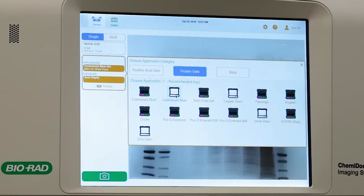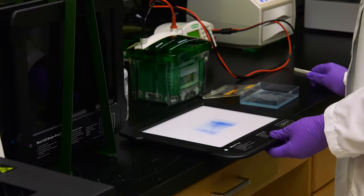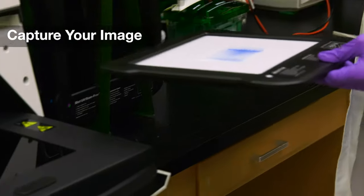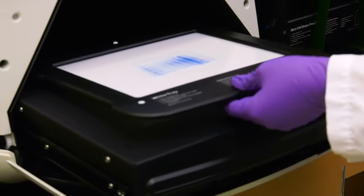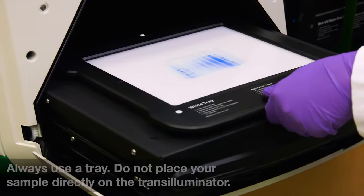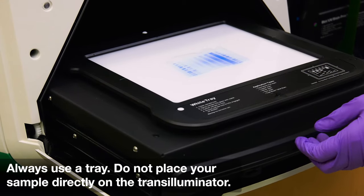SmartTray technology automatically recognizes application-specific trays and adjusts imaging parameters and software options accordingly. For colorimetric stains, select the white tray. Center your sample on the tray. When you are satisfied with the position, push the transilluminator back in and close the drawer.